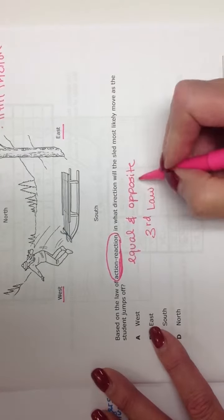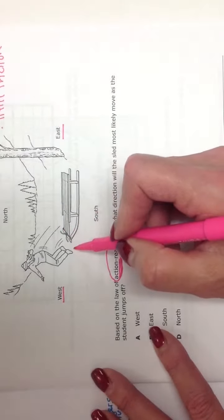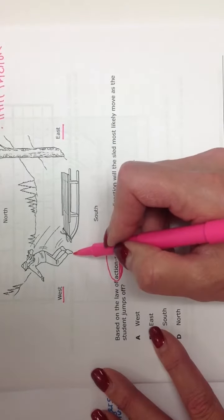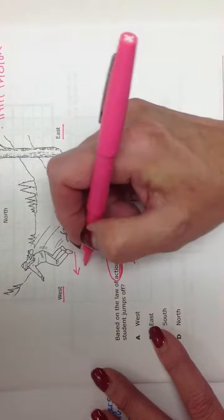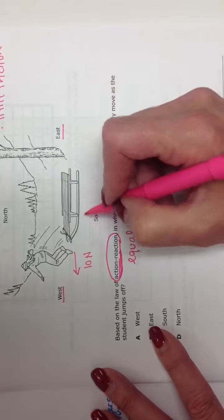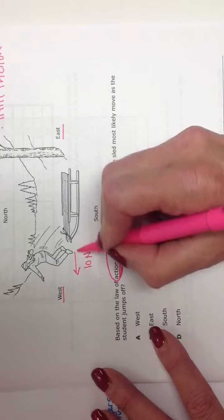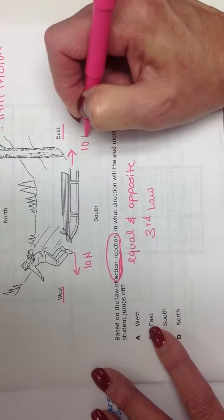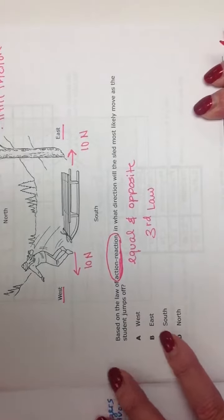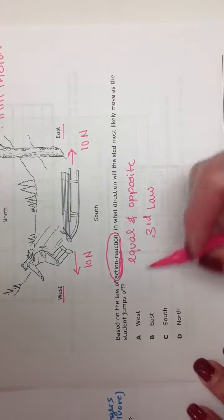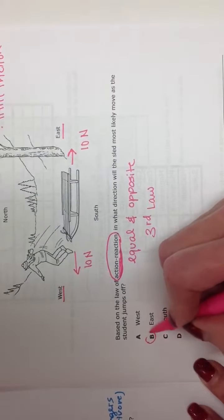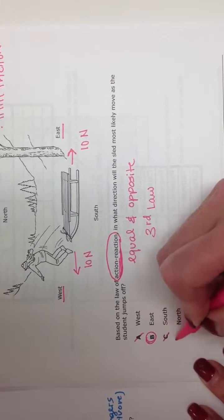So equal and opposite means if the student jumps off to the west, let's say he jumps off to the west with ten newtons of force, then the sleigh is going to move equal and opposite. So the sleigh is going to move to the east with ten newtons of force. Right? That's what that's saying. So what direction is it going to move? In the opposite direction, the exact opposite would be east.